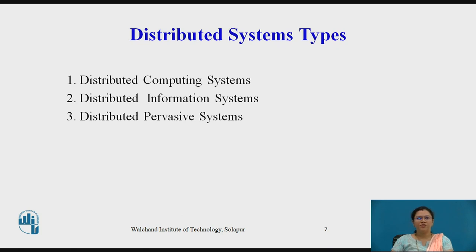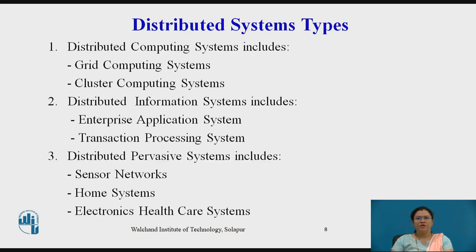We will see the different types of distributed systems. First, distributed computing systems. Second, distributed information systems. Third, distributed pervasive systems. Distributed computing systems include grid computing and cluster computing. Distributed information systems include enterprise application systems and transaction processing systems. Distributed pervasive systems include sensor networks, home systems, electronic healthcare systems, and more. These are all the different types.